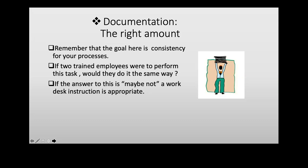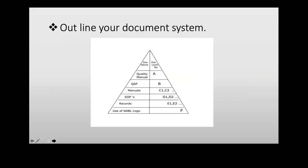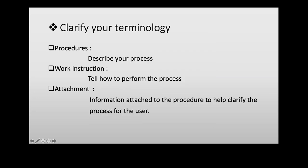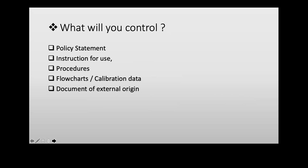Outline your document system. The most important documents needed are: quality manuals, quality system procedures, other manuals, SOPs, and records. For NABL, knowledge of the use of the NABL logo is also important — once the lab gets accreditation, you need to read NABL 1C3. Procedures describe your processes; work instructions tell how to perform the process; attachments are information attached to procedures to clarify the process. Documents to control include policy statements, instructions for use, procedures, flowcharts, calibration data, and documents of external origin.